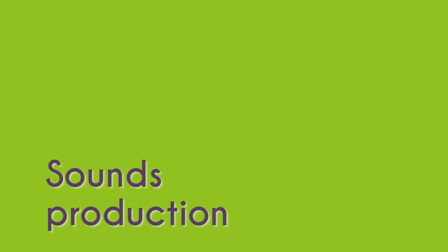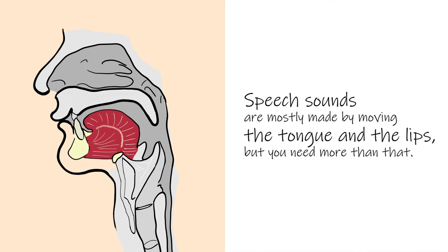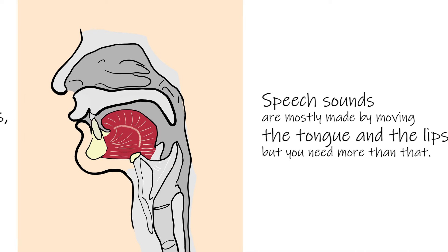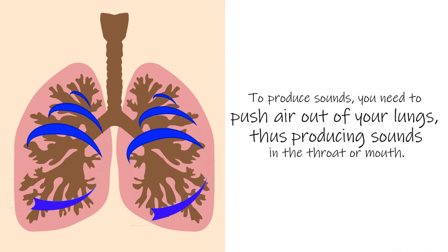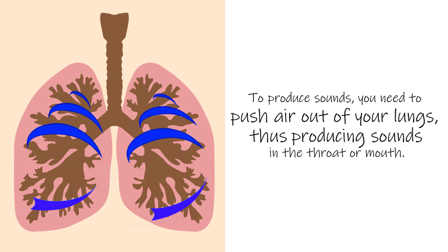What is the nature of sounds and where do they come from? To produce sounds you need to do more than just move your tongue and lips. Sounds are made mostly by pushing air out of your lungs and then modifying that air before it exits. Other ways exist — for example breathing air in — but that takes more energy and is more difficult. The easiest way is simply to push air out.